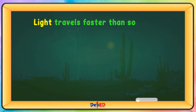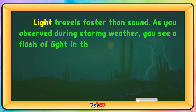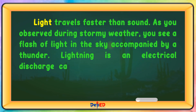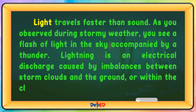Light travels faster than sound. As you observed during stormy weather, you see a flash of light in the sky accompanied by thunder. Lightning is an electrical discharge caused by imbalances between storm clouds and the ground, or within the clouds themselves.